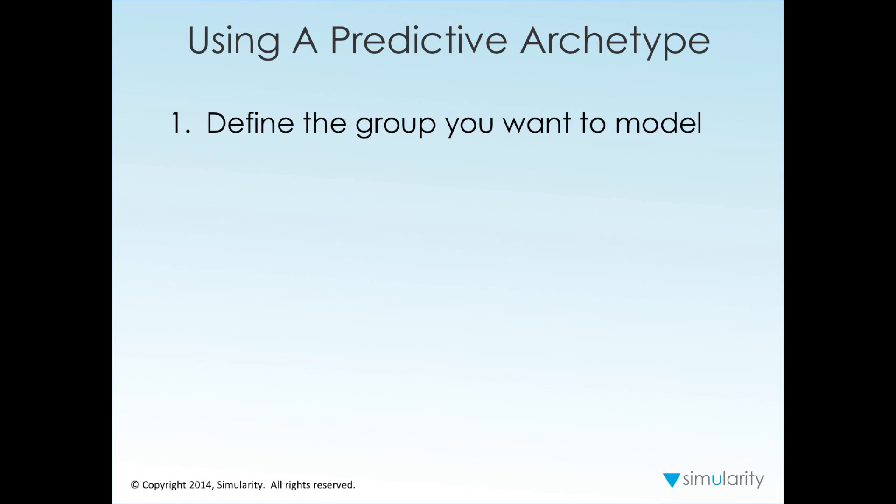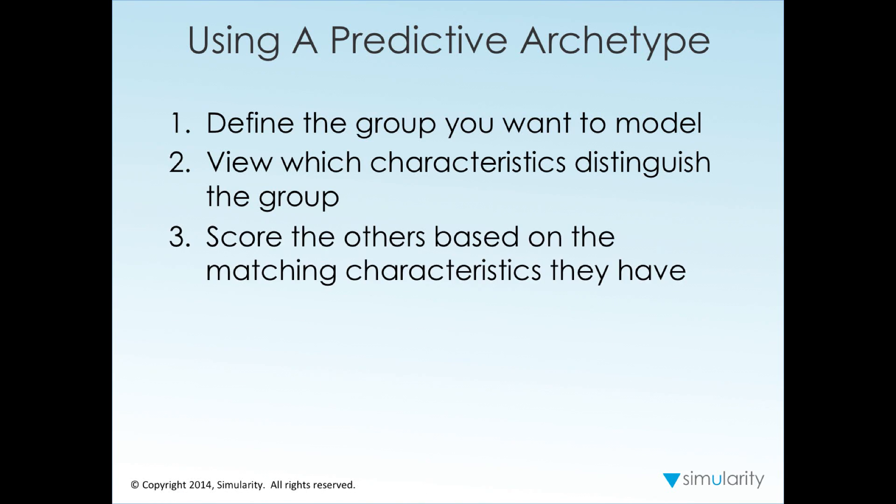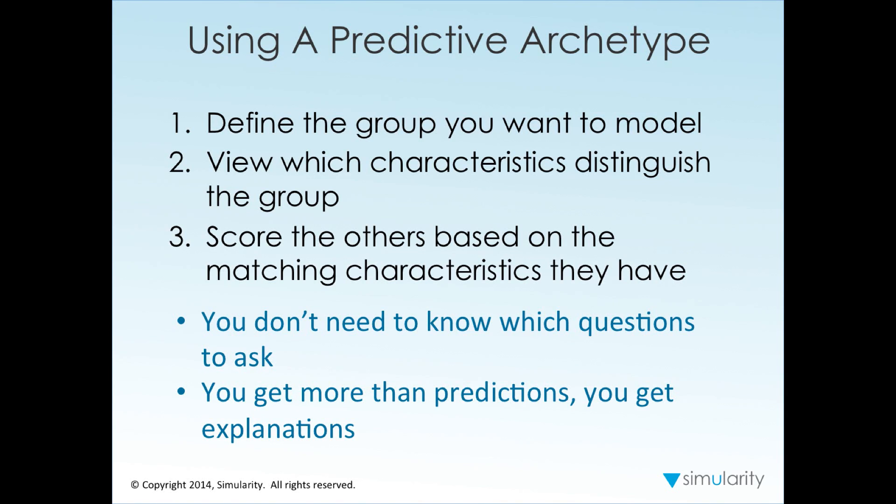Using a predictive archetype is easy. You define the group you want to model, view the characteristics that distinguish the group, and score others based on the matching characteristics they have. You don't need to know which questions to ask - it looks for the most correlated features in all of your data. And you get more than predictions, you get explanations. You get to see why we predict that an item should belong to the group that you're trying to model.